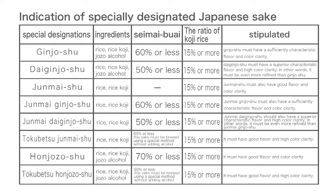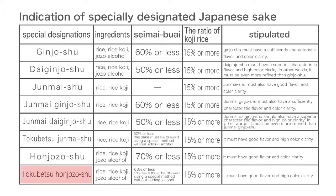The eight special designations are: ginjoshu, daiginjoshu, junmai-shu, junmai-ginjoshu, junmai-daiginjoshu, tokubetsu junmai-shu, honjōzō-shu, and tokubetsu honjōzō-shu.